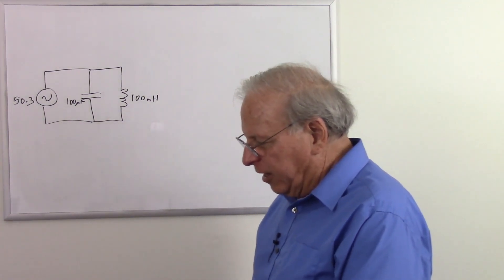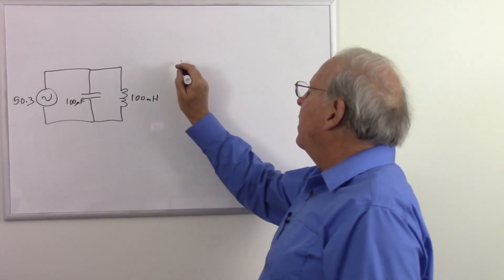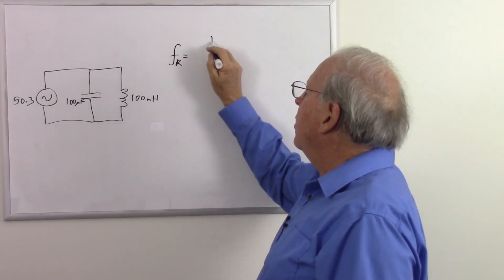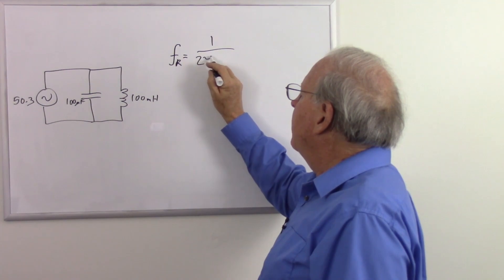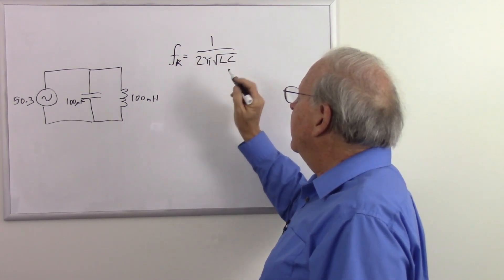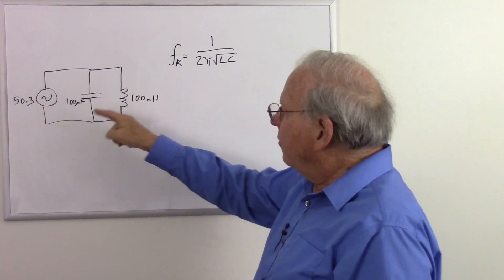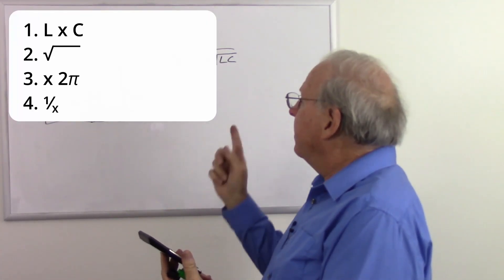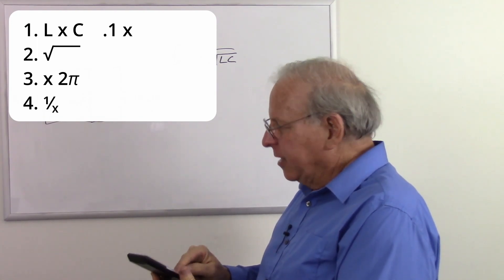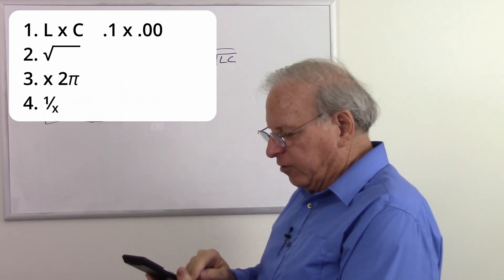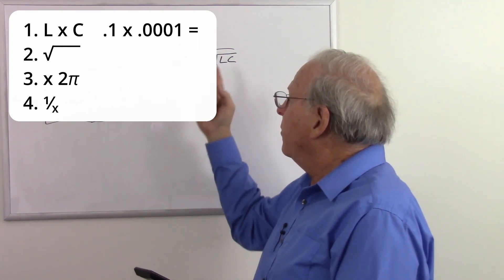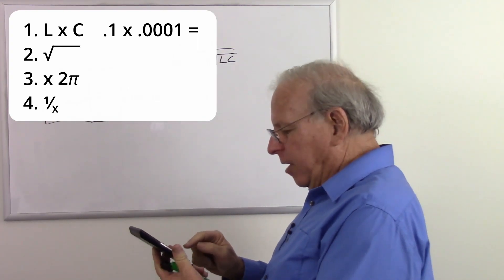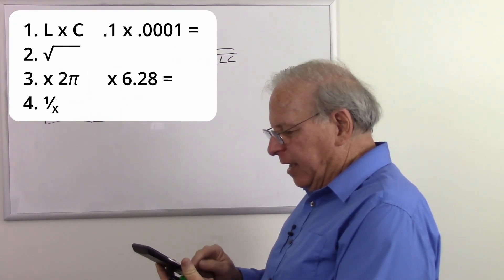And why did I pick 50.3 Hertz? Well, let's do a quick calculation. We have our resonant frequency is equal to 1 over 2π times the square root of LC. So let's do that and find out what our resonant frequency is. So that's going to be L, which is 0.1, times C, which is 0.0001, equals. I'm going to take the square root of that. Then I'm going to multiply that by 6.28, 2π equals, and then I'm going to take the reciprocal.